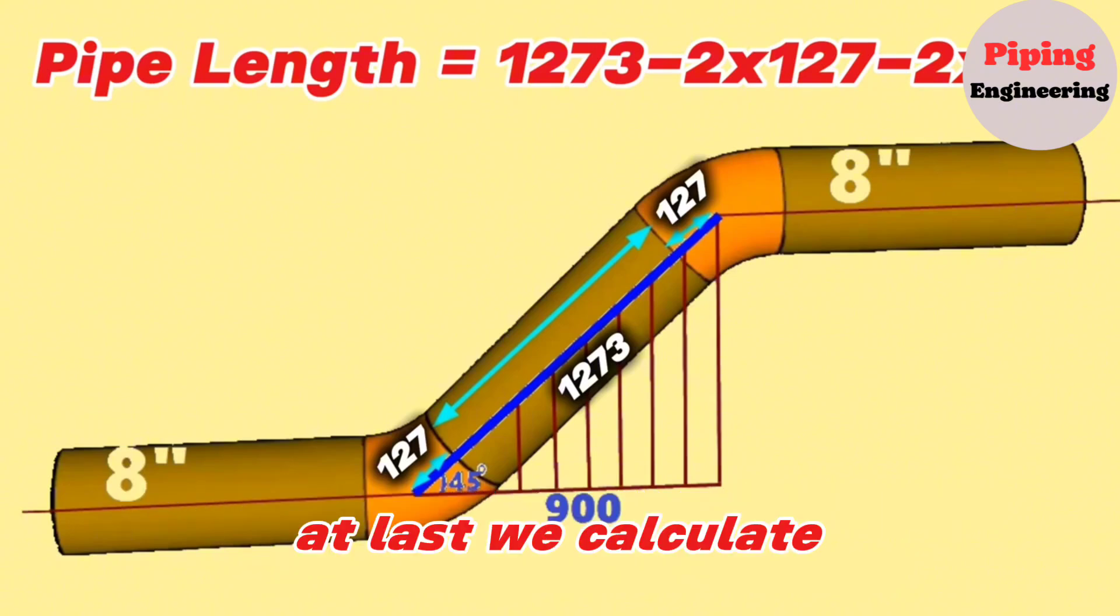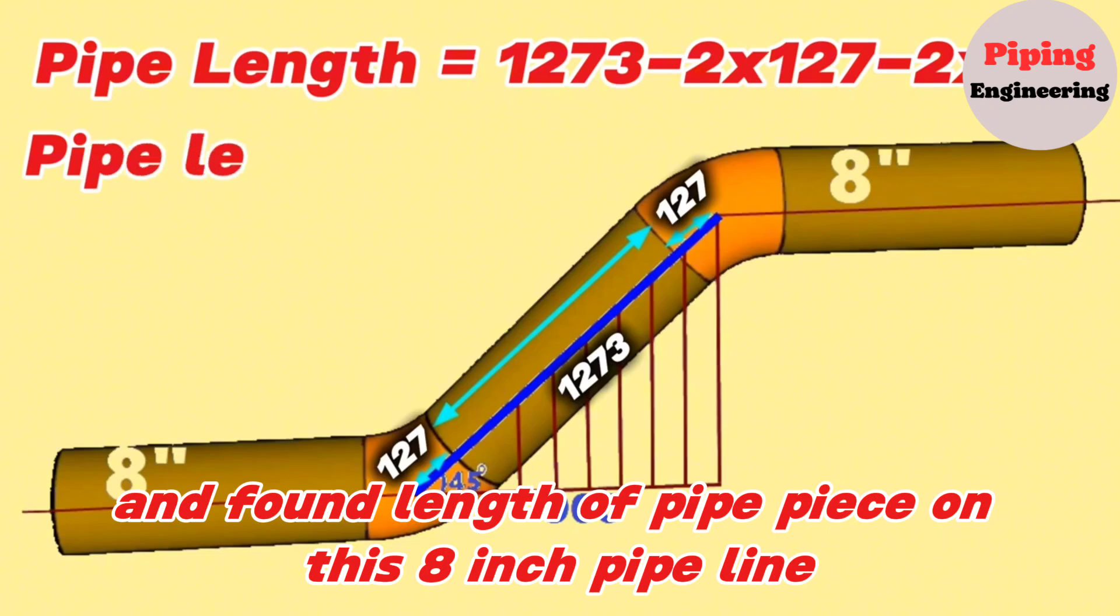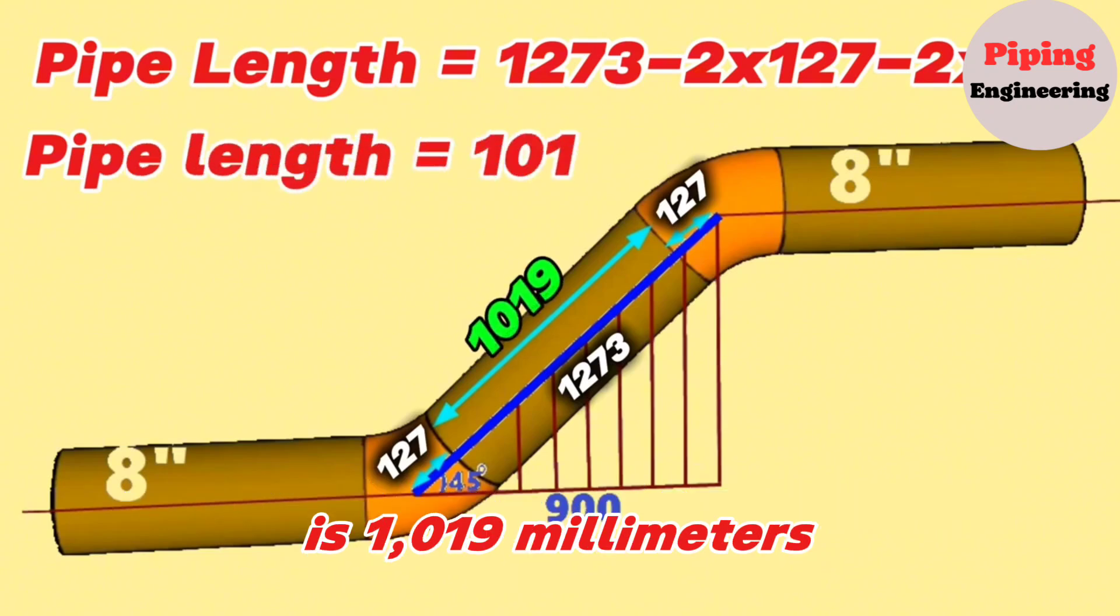At last, we calculate and find the length of pipe piece on this 8-inch pipeline is 1,019 millimeters.